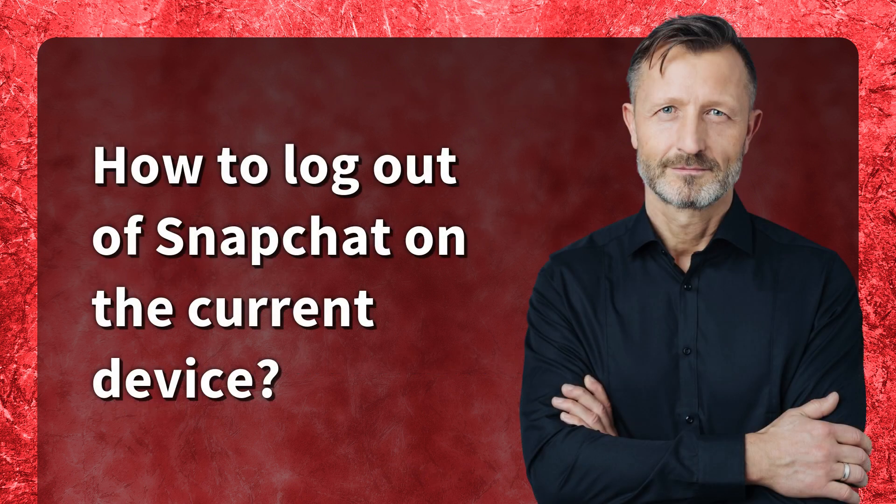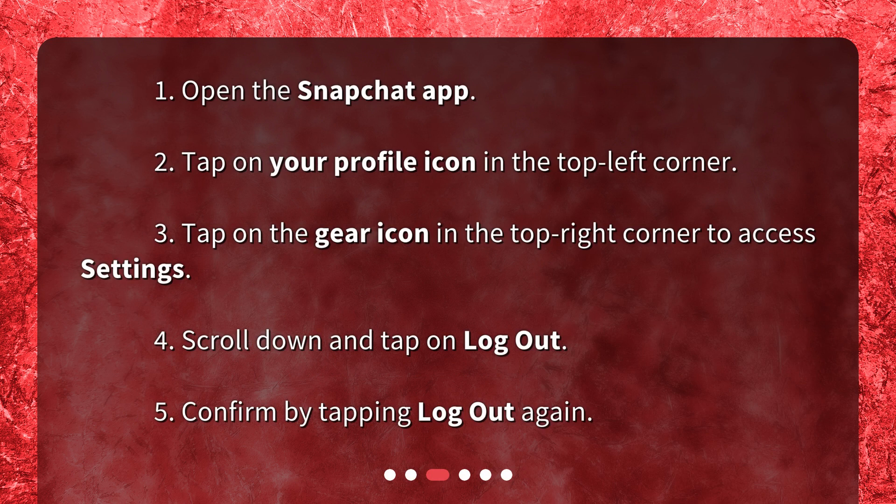How to log out of Snapchat on the current device? 1. Open the Snapchat app. 2. Tap on your profile icon in the top left corner. 3. Tap on the gear icon in the top right corner to access settings. 4. Scroll down and tap on Logout. 5. Confirm by tapping Logout again.